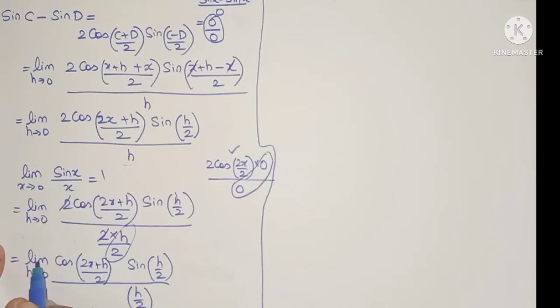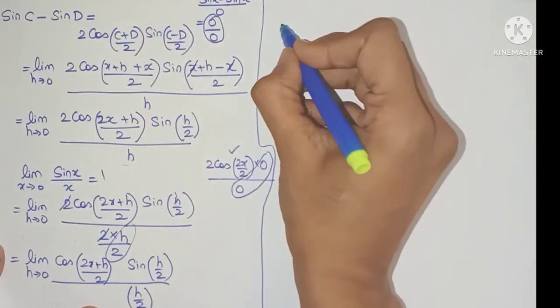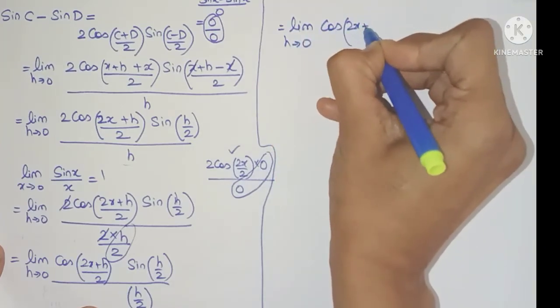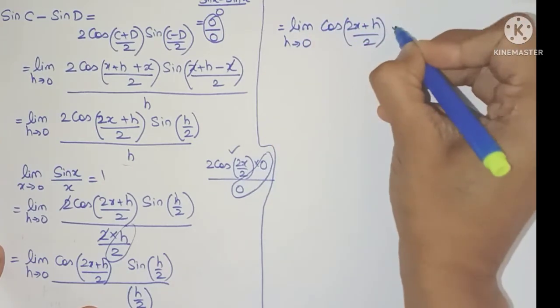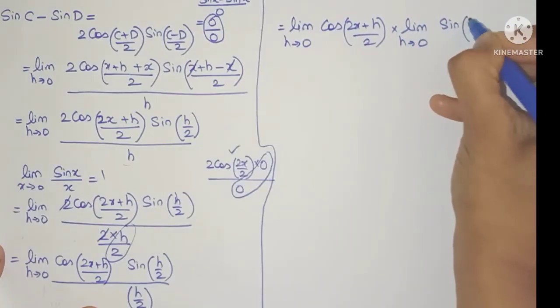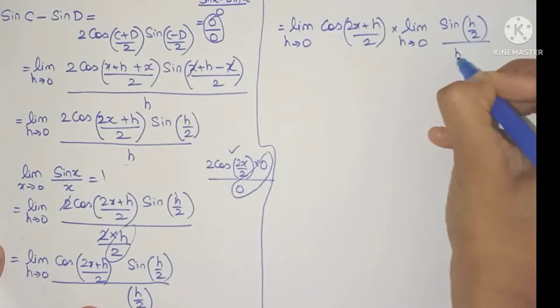Now we are going to use the limit property where we can bring the limit separately to each function. So we'll get limit h tends to 0 cos of 2x plus h by 2 into limit h tends to 0 sin h by 2 divided by h by 2.